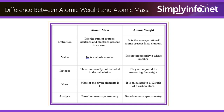Atomic mass is a whole number, whereas atomic weight is not necessarily a whole number. Isotopes in atomic mass are usually not included in the calculation, but they are required for measuring the weight in atomic weight.